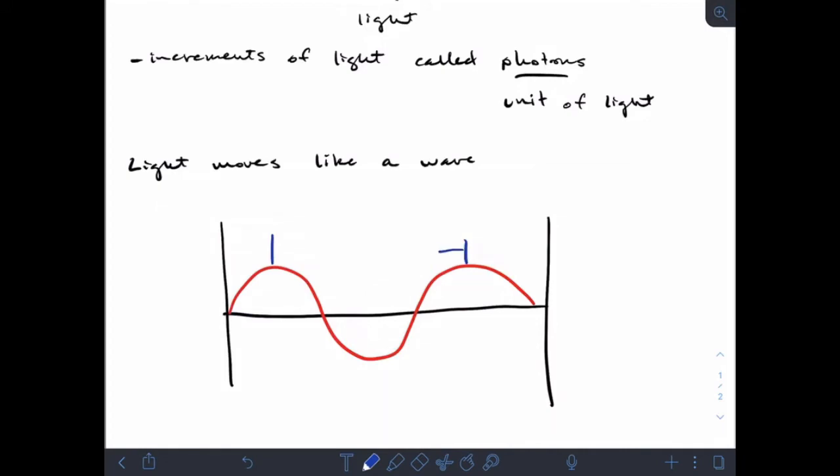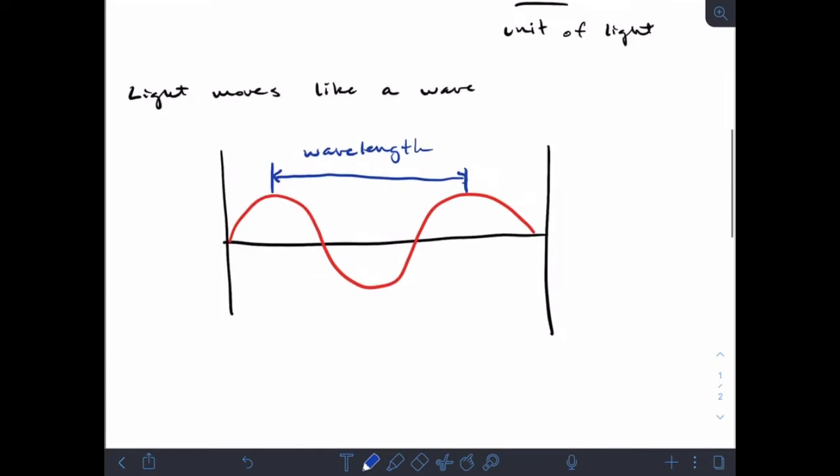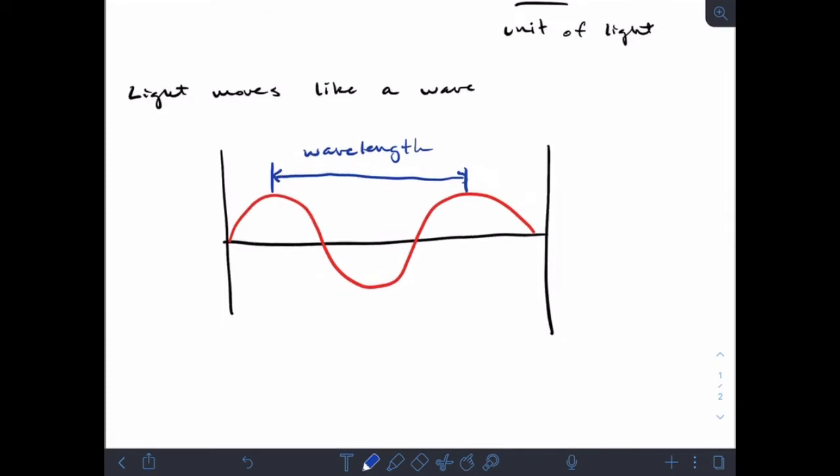I can be specific about the distance between two peaks of the wave, and we call that a wavelength. From the top of one wave to the top of the next wave is one wavelength.